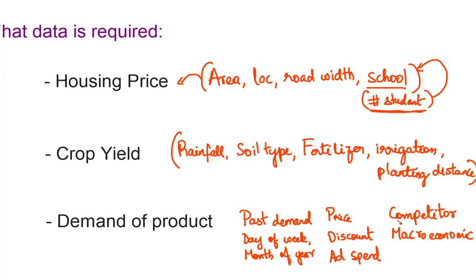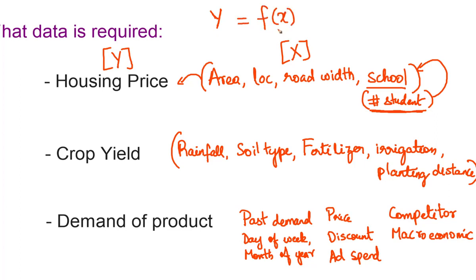That's the entire idea behind this. Once you have the data, linear regression learns the relationship between the X's you have collected and the Y you want to predict. It learns this relationship by forming a mathematical equation that predicts Y as a function of all the different X's. Given the X's, you will be able to predict Y. From the next lesson onwards, we will get more technical and understand the equations, the math, and the intuition behind it all in full detail.